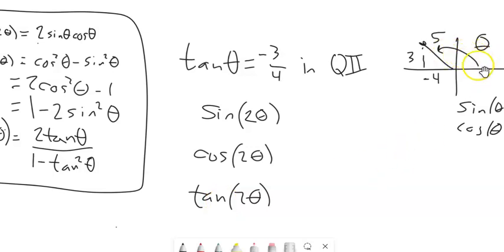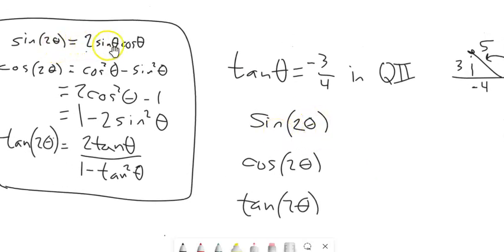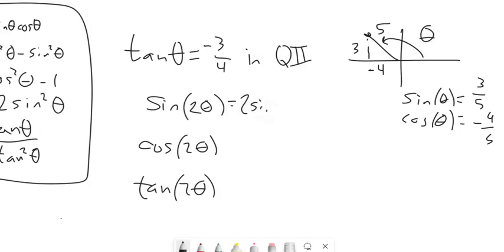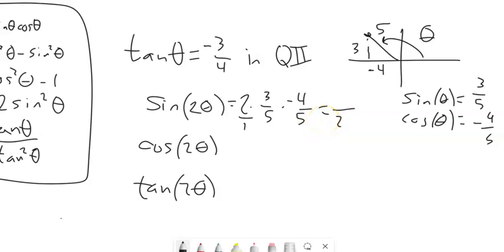Sine of 2 theta is 2 sine theta times cosine theta. Sine theta is 3/5 and cosine theta is negative 4/5. So we have 2 times 3/5 times negative 4/5. Multiplying straight across: denominator is 1 times 5 times 5 = 25, and numerator is 2 times 3 times negative 4 = negative 24. So the sine of double this angle is negative 24 over 25.